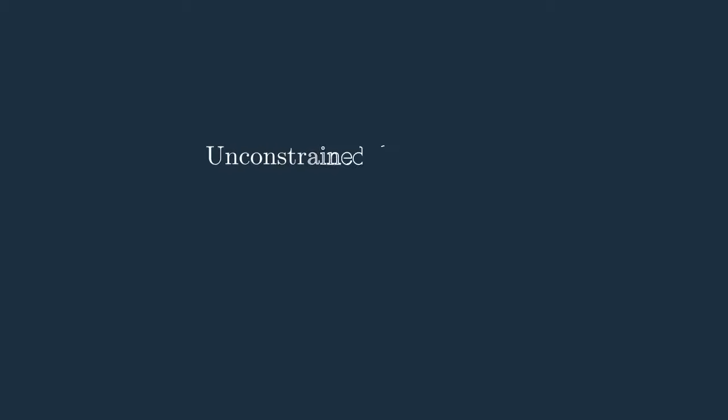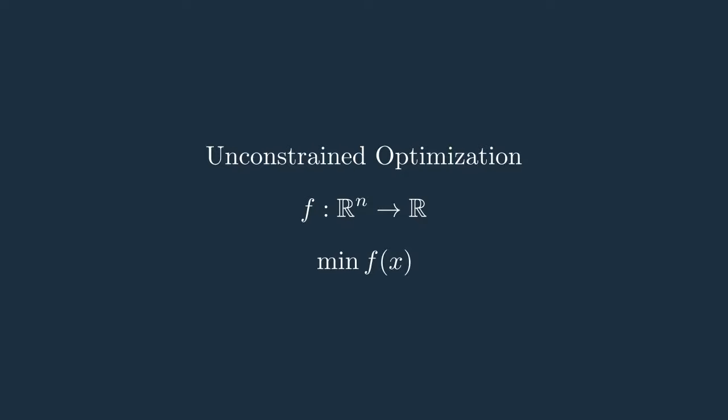Today we will focus exclusively on unconstrained optimization. What that means is that we are given a multivariate scalar-valued function f — said differently, we have a function in n variables that takes real values — and we want to minimize this function globally, meaning we want to find the point x in R^n where f takes the smallest possible value.